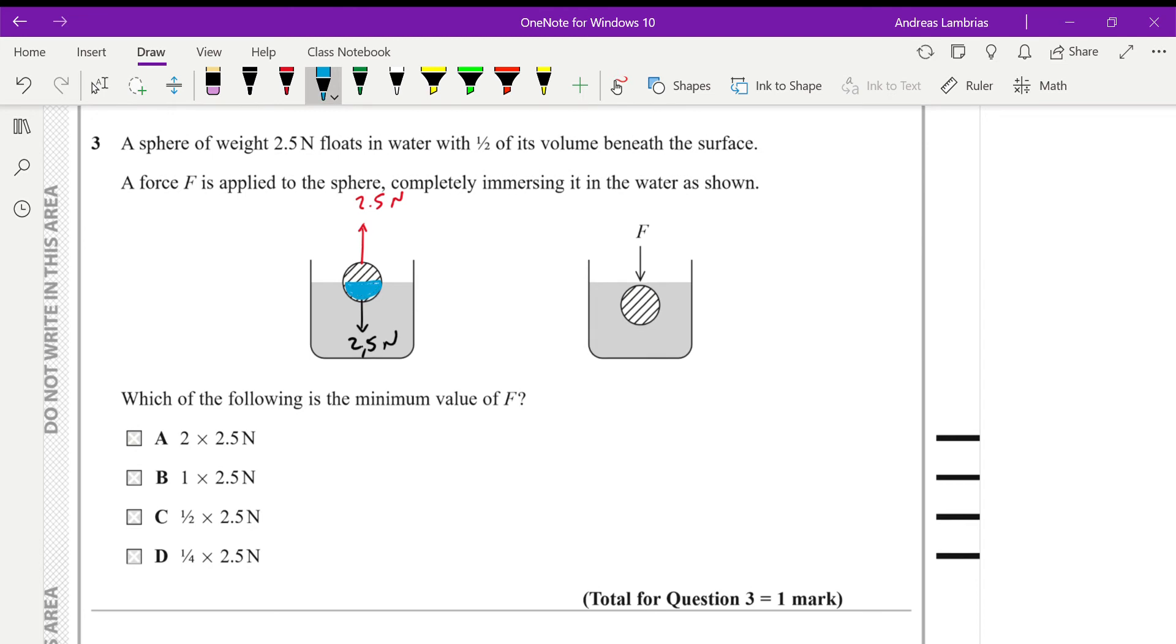Now, if we fully submerge it, what's happening to the upthrust? Since the volume of the submerged is going to be double, therefore upthrust will also double. So in that case, the upthrust becomes 5 newtons. The weight is still 2.5. The weight doesn't change.